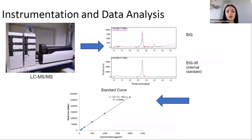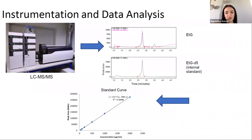Those product ions are a result of ionization and fragmentation steps in the instrument that are specific to the molecule, whose signal produces peaks that can be measured and plotted against their known concentration to determine where a sample with a known peak area on the y-axis and unknown concentration on the x-axis would lie.